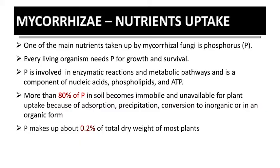Why do mycorrhizal fungi specialize in a specific nutrient element — phosphorus? Because phosphorus is important for any living cell. Without phosphorus, plants or any cells cannot survive. Phosphorus is involved in enzymatic reactions in metabolic pathways; it is a component of molecular acids DNA and RNA in the cell. It is important for phospholipids for membrane function, and more importantly it is part of ATP — adenosine triphosphate — the battery for the cell to produce energy. Without it, the cell cannot survive. That is why mycorrhizal fungi find it uniquely important to specialize in taking up phosphorus.